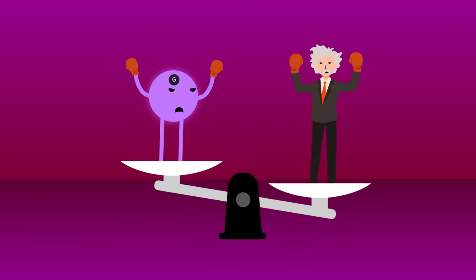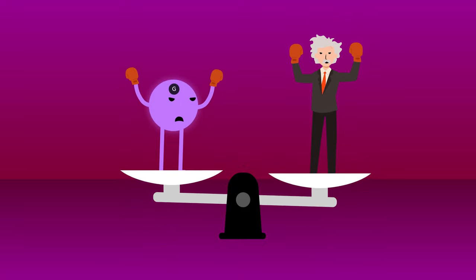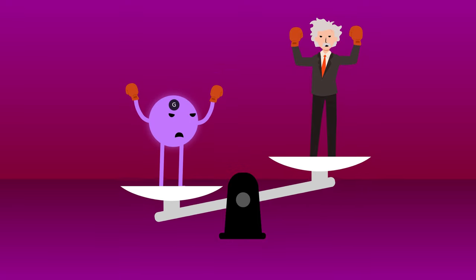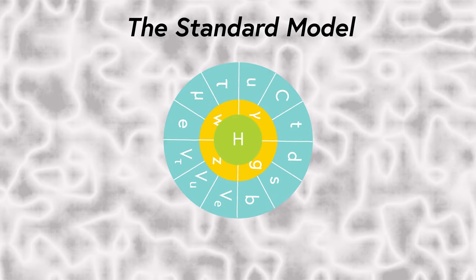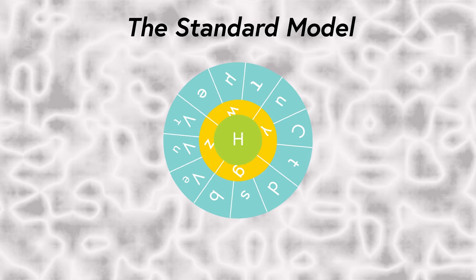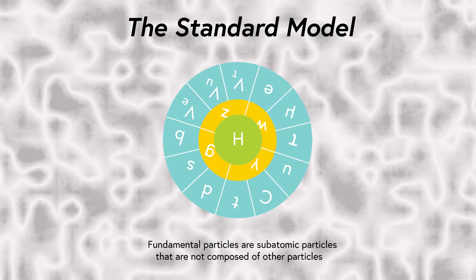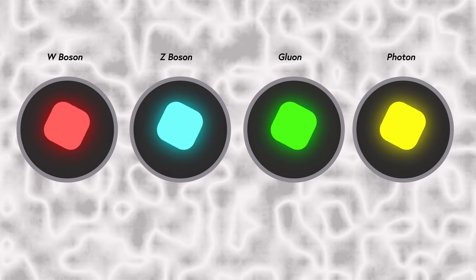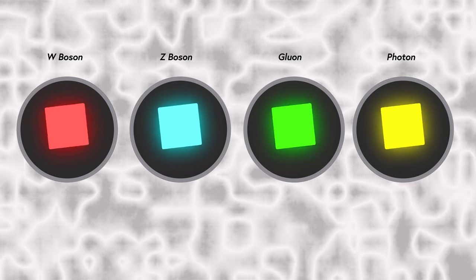In order to understand the battle between classical and quantum physics on gravity, we first have to understand why the idea of gravitons is so important. To do that, we have to take a look at what physicists call the standard model. The standard model of physics is the currently accepted theory which classifies and explains all the fundamental particles and their interactions with each other. It also explains the particle interactions that govern the strong and weak nuclear forces and the electromagnetic force.